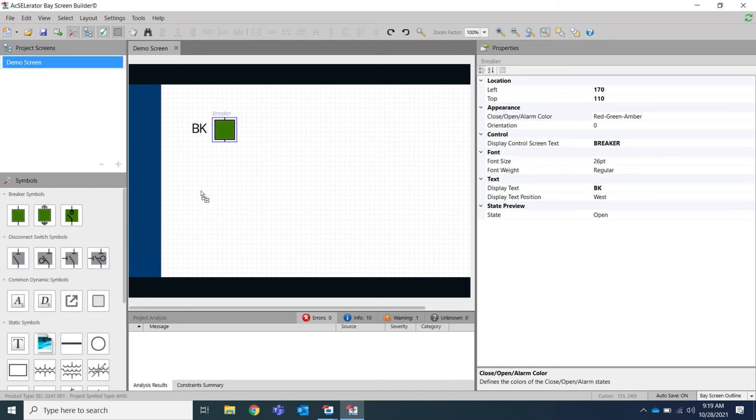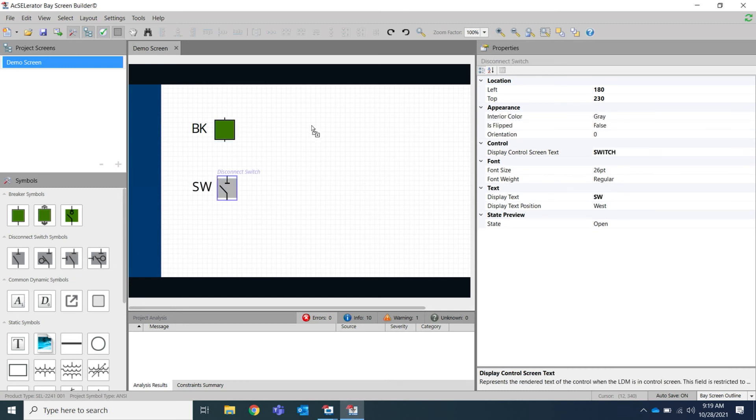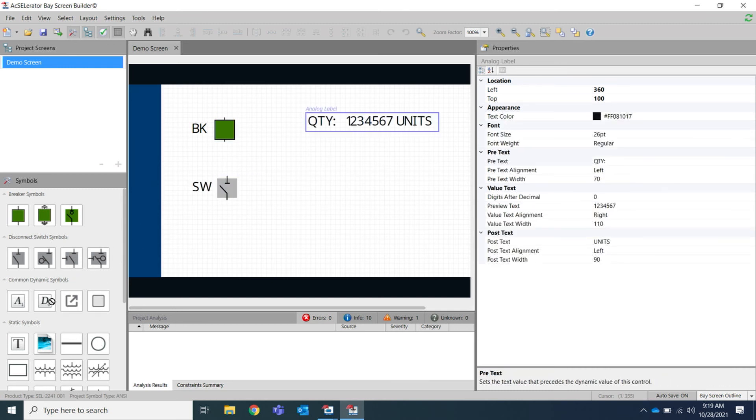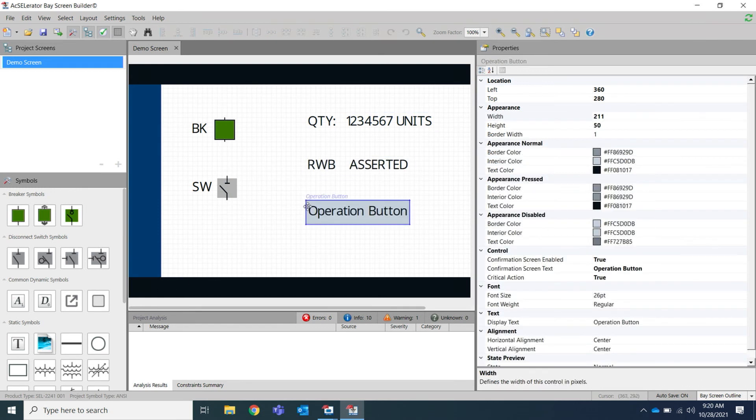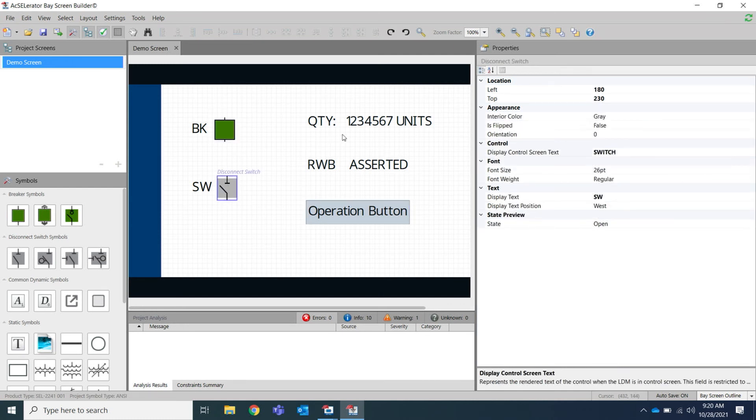Here I've added a breaker, a disconnect switch, an analog label, a digital label, and an operation button. You can update the properties of each of these symbols using the properties window on the right hand side of BayScreen Builder.